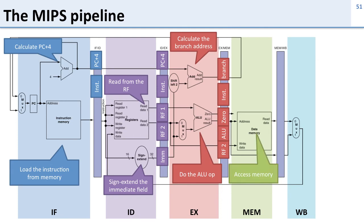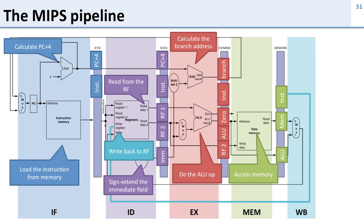In the memory stage we access memory using the ALU output as the address, and if we're writing data we use RF2 from the previous pipeline register. We output and keep our instruction and ALU result, and also take the data from memory as we need this to decide what we write back into the register file. In the write back stage we write back into the register file, remembering to use the write back register from the instruction in our pipeline register, not the instruction in the IF/ID pipeline register.